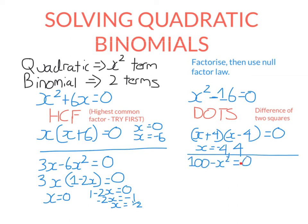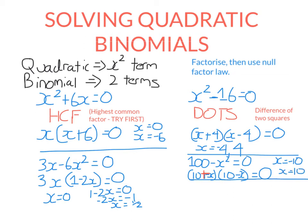Let's try 100 minus x squared equals zero. We have a perfect square minus a perfect square — difference means minus. To factorise we get two brackets, square root the first, square root the second, one gets a plus and one gets a minus. If 10 plus x equals zero, then x equals minus 10. If 10 minus x equals zero, x equals positive 10. So the solutions are minus 10 and positive 10.